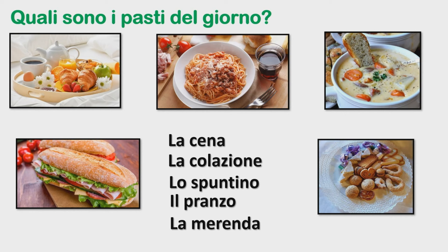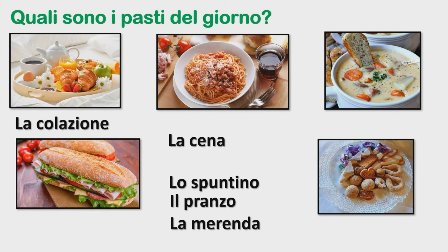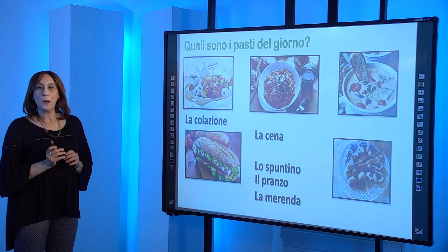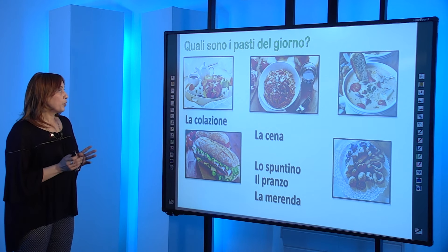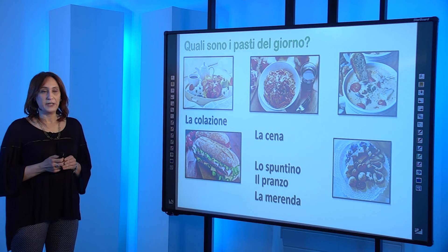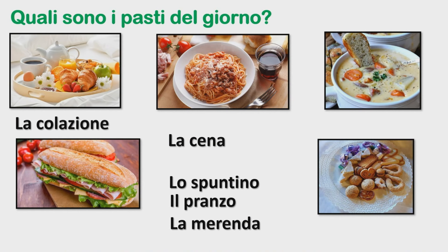Di che cosa si tratta per la prima foto, quindi il primo pasto del giorno? Si tratta della colazione, quindi il primo pasto del giorno, che può essere composto da un caffè, una spremuta di frutta, pane con burro e marmellata, un cornetto. Lo possiamo fare a casa oppure anche al bar. Il secondo pasto, che è il pasto più importante del giorno, è il pranzo. Quindi si fa verso le tredici.